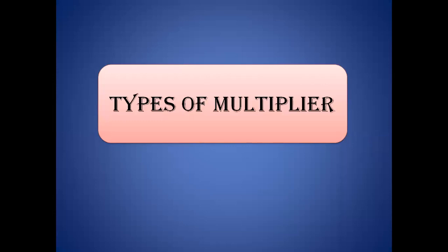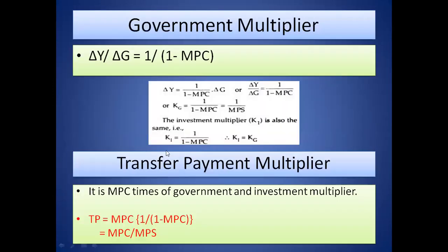There are different types of multiplier. The basic formula is K = 1/(1-MPC) = 1/MPS. The government multiplier is change in income divided by change in government expenditure, which also equals 1/(1-MPC). So the investment multiplier and government multiplier share the same formula — an important point: the investment multiplier is exactly equal to the government multiplier.